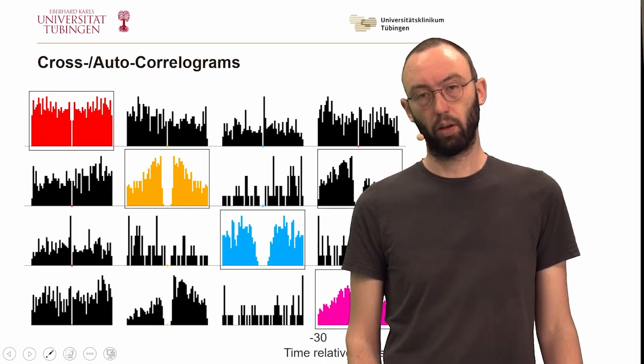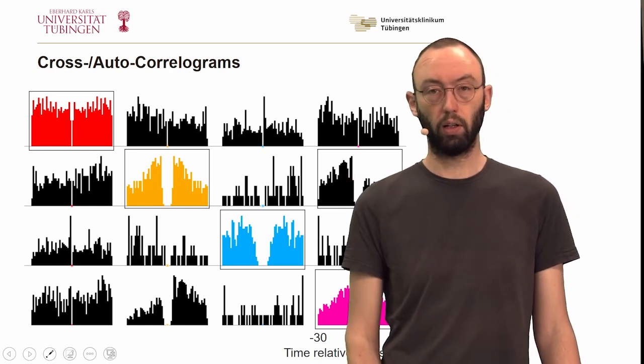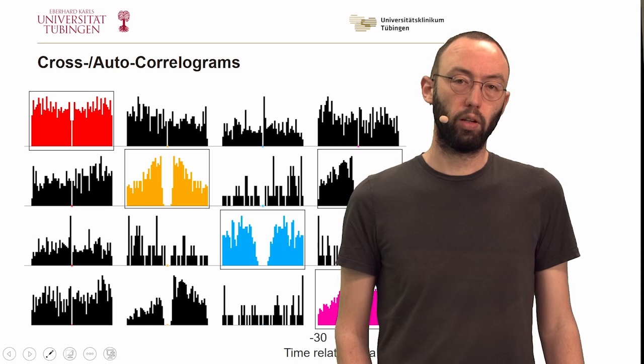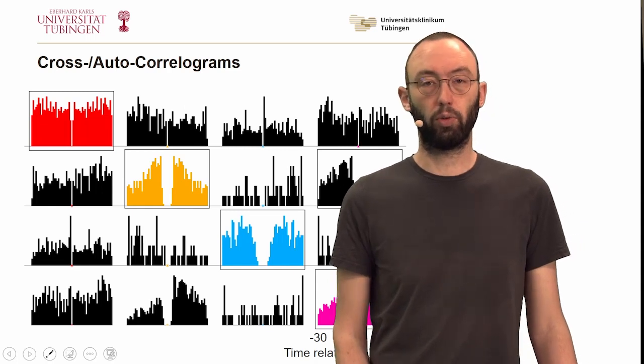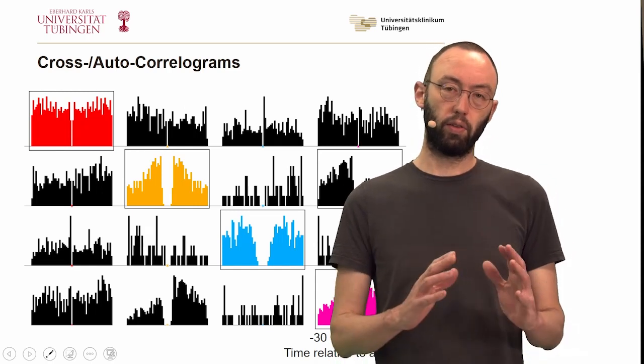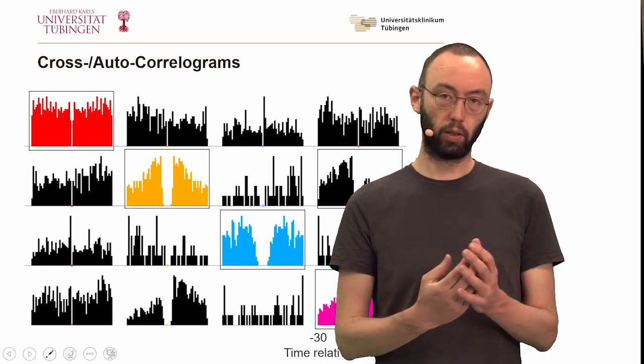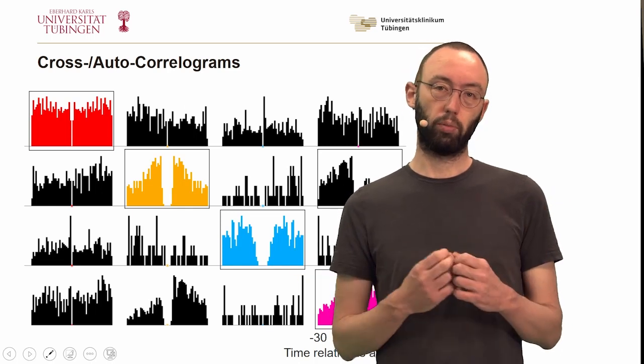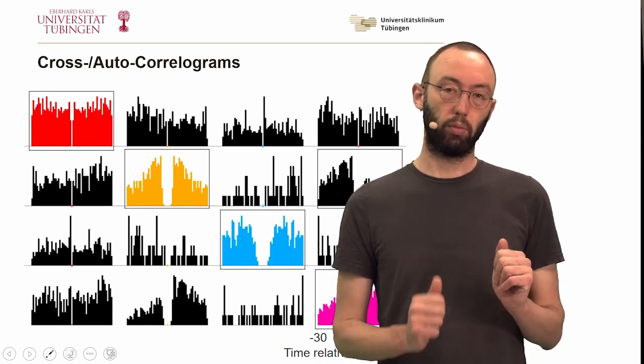But what is striking is when you look at the joint cross-correlogram here of the orange and the pink cluster, then this still shows a refractory period. This is remarkable because it indicates that very likely the spikes in this orange and in this pink cluster actually come from the same neuron. Because you may remember that the clusters of the orange and the pink clusters were also overlapping. So probably there can be factors like electrode drift or spike amplitude adaptation. These were spikes from an individual neuron that changed slightly over time and thus ended up into two clusters.